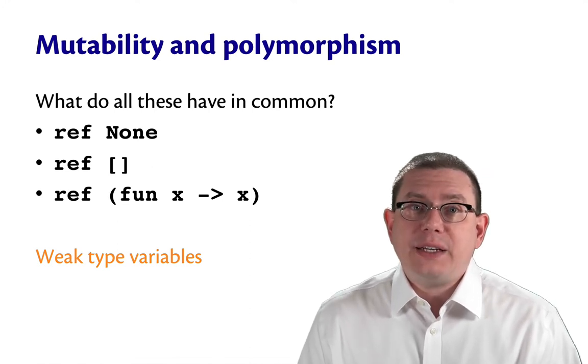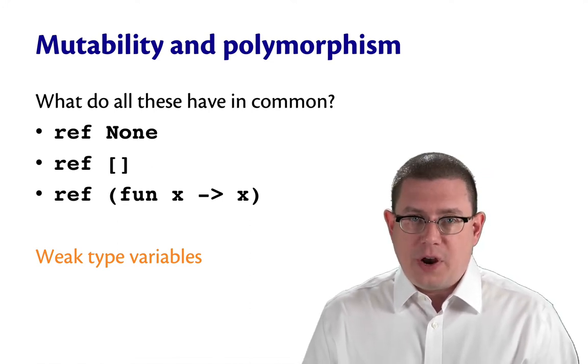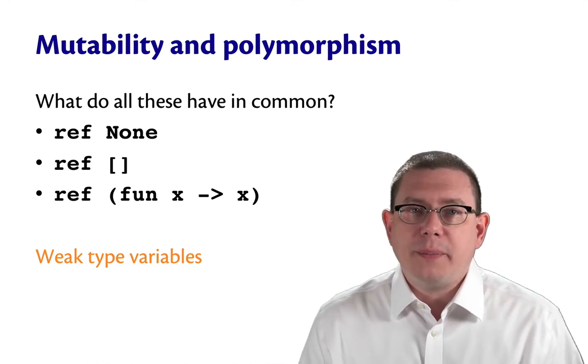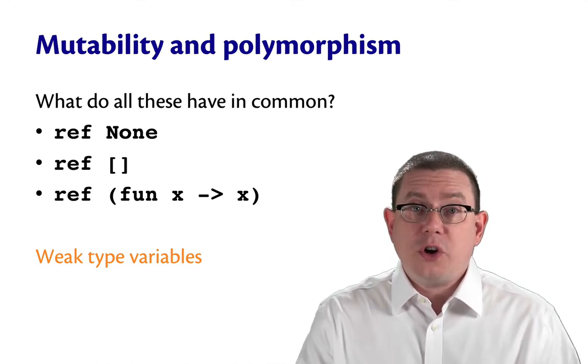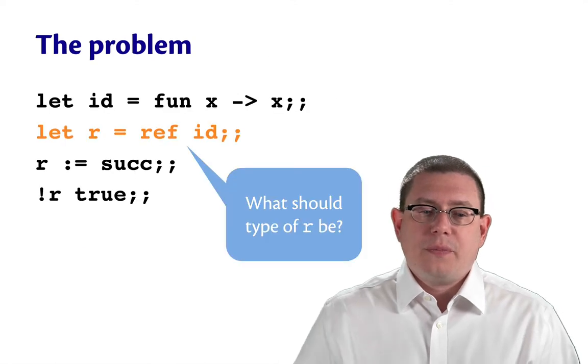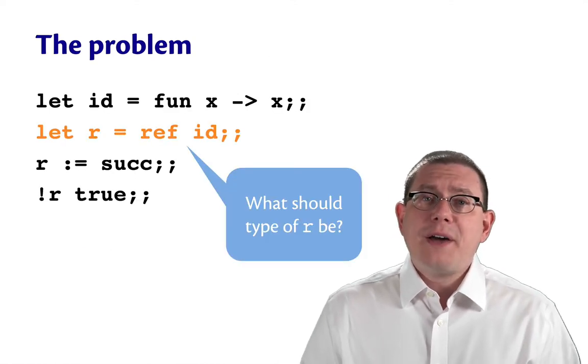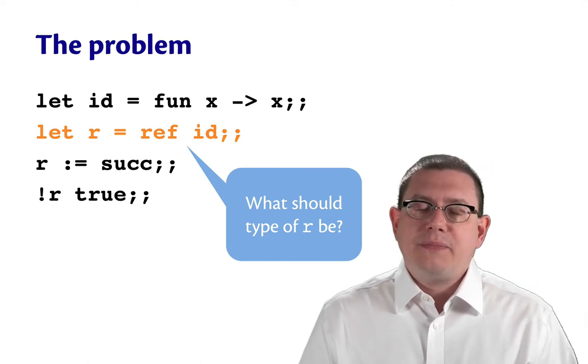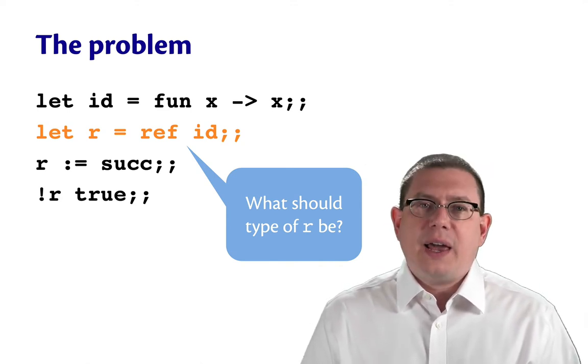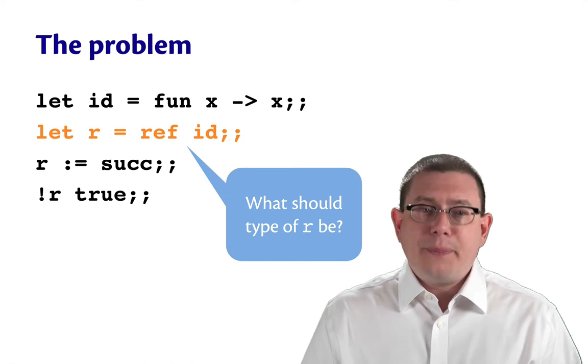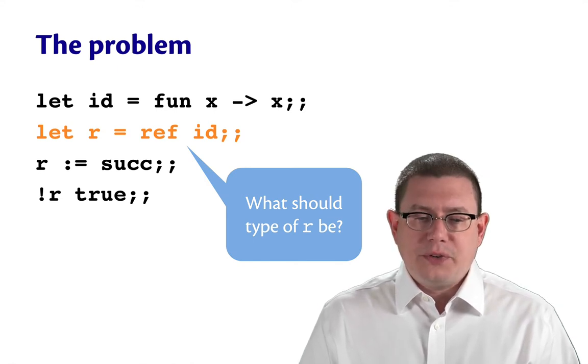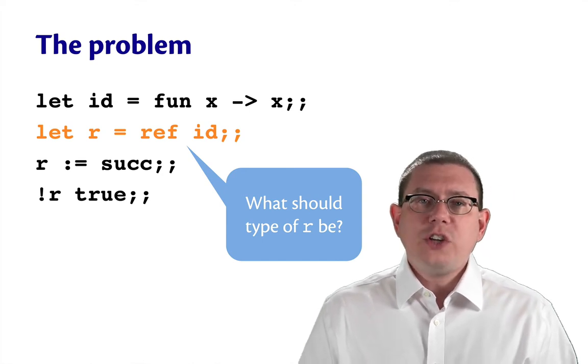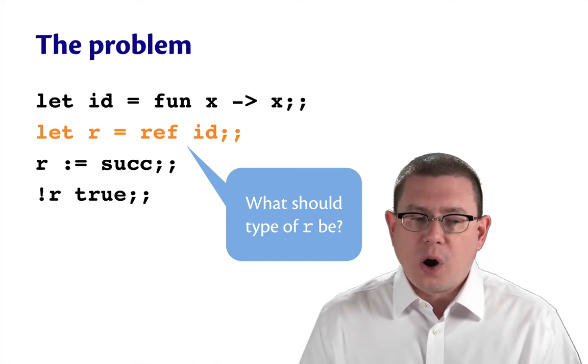So what I want to do next is to explain to you what weak type variables are. But you're going to need to understand first the problem that they solve. So let's turn to that. Here's the problem. Suppose you have this code in which you bind the identity function to the name id, and then you create a reference to that identity function, update the reference, and then try to use the reference.